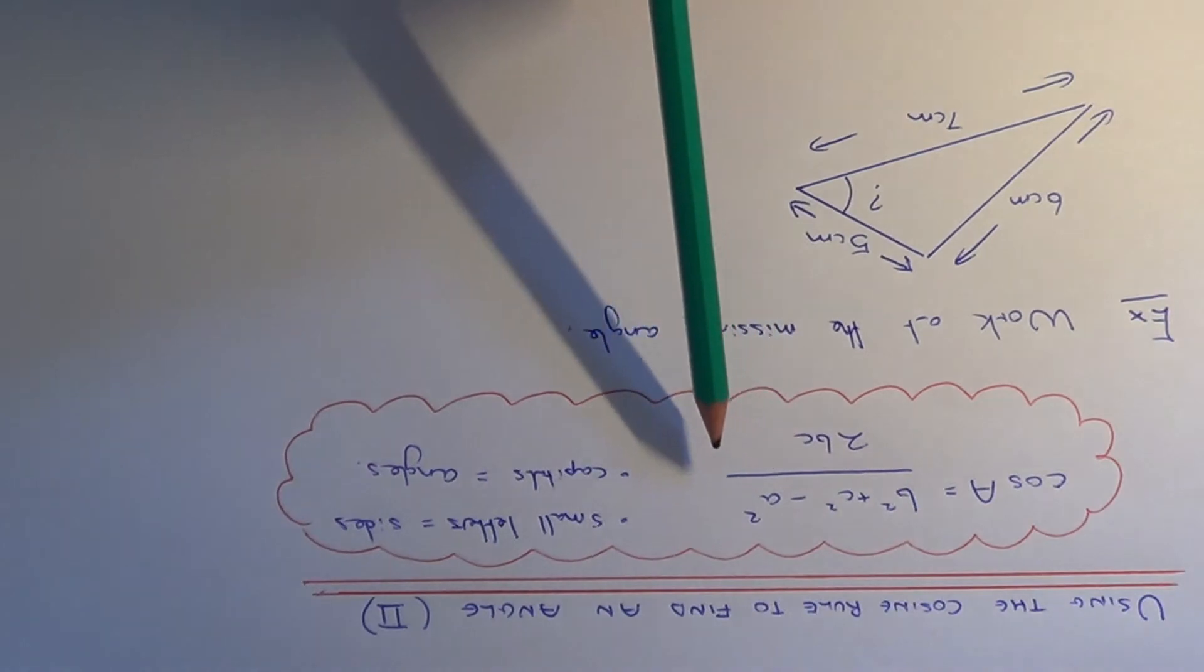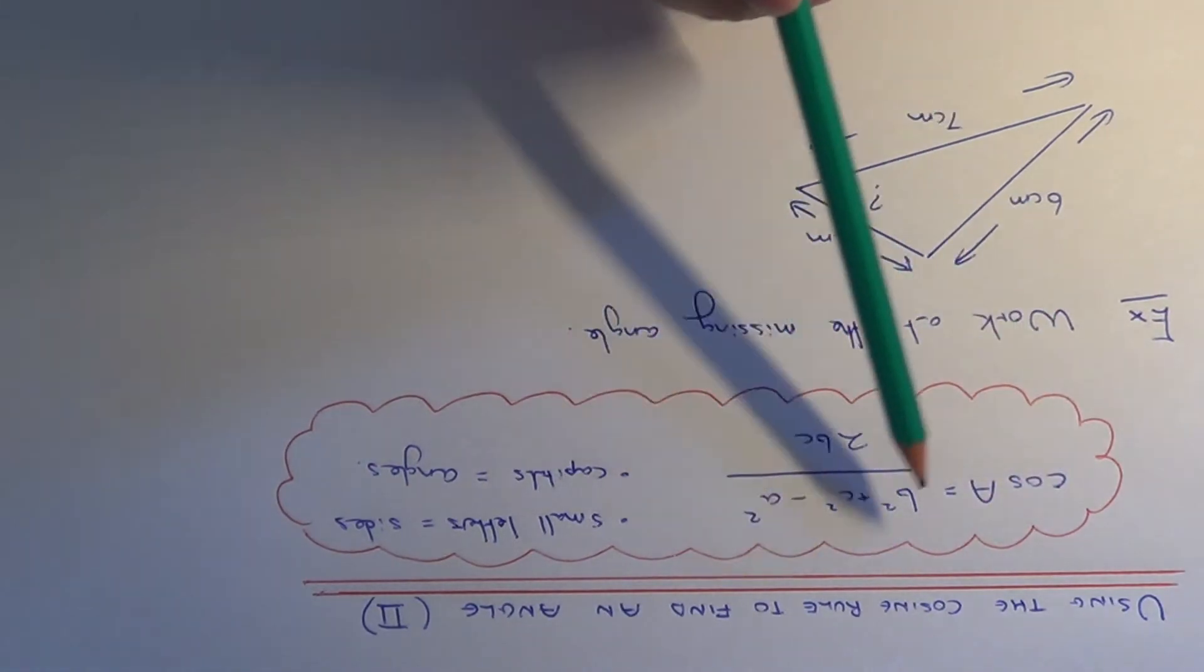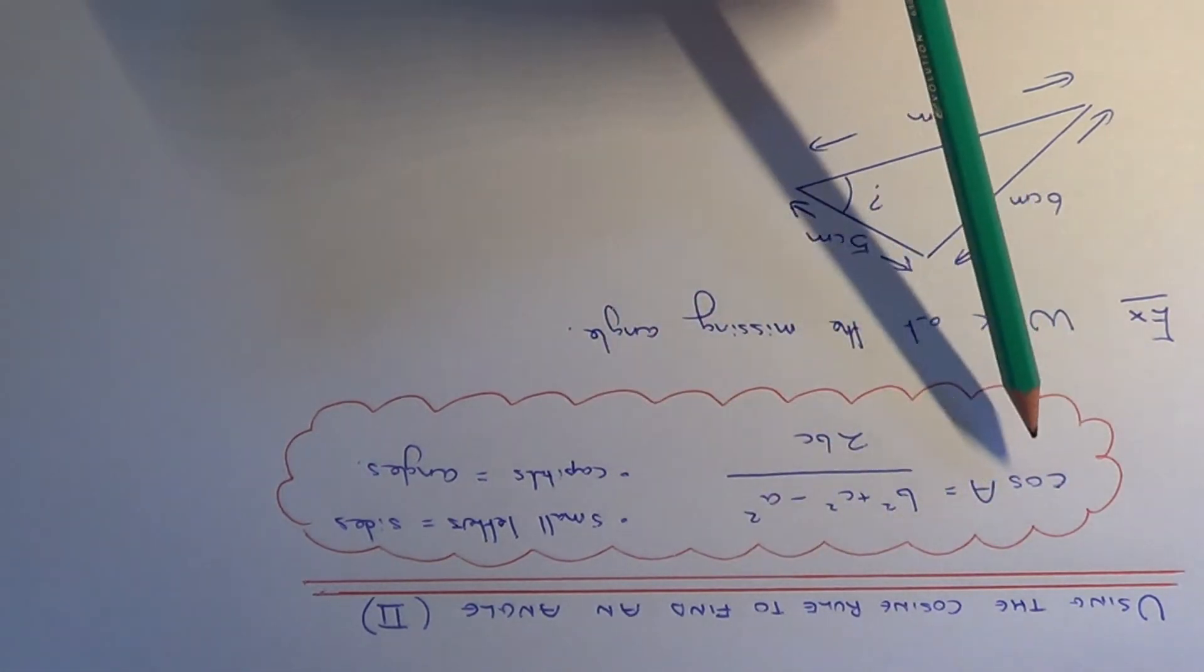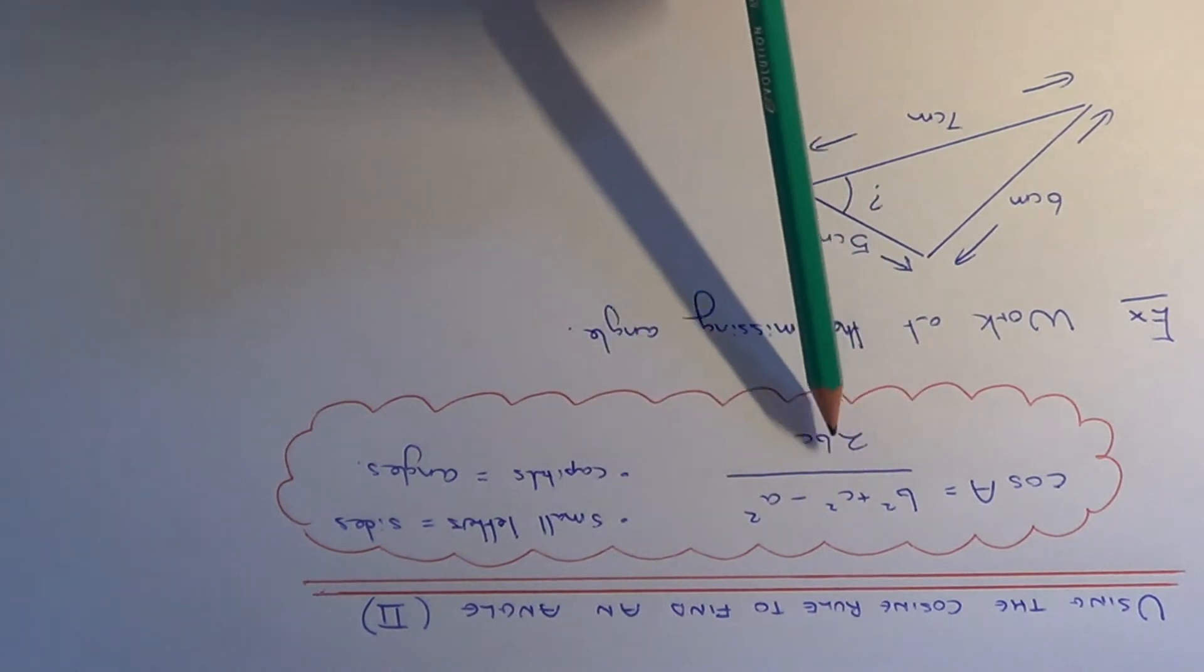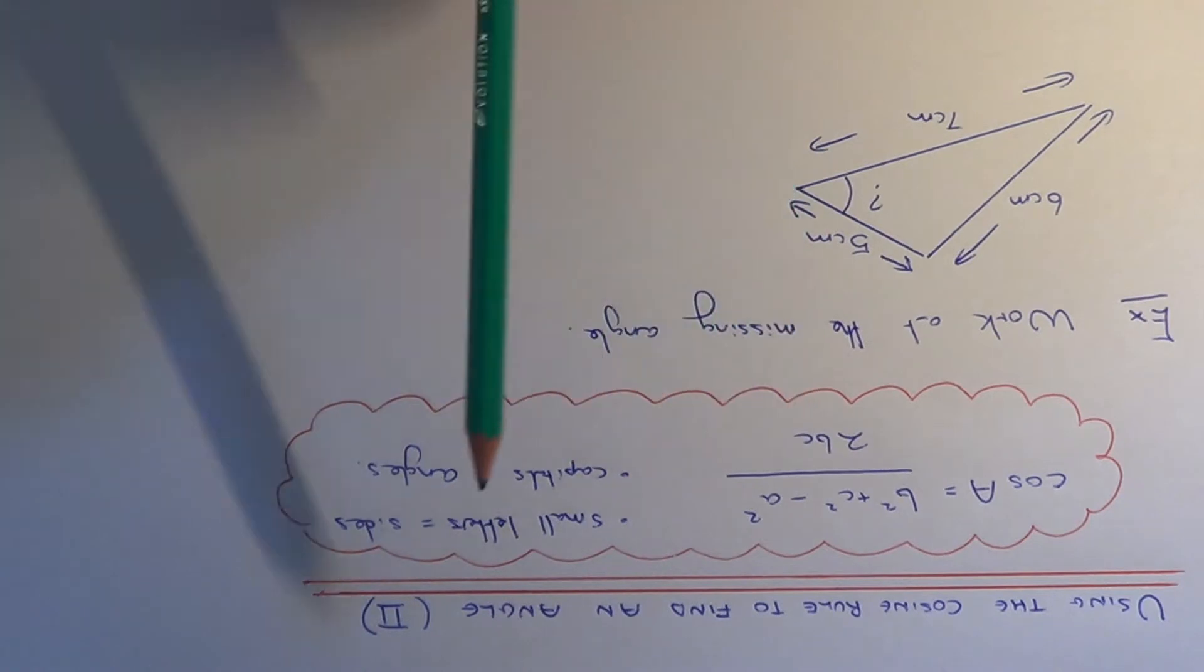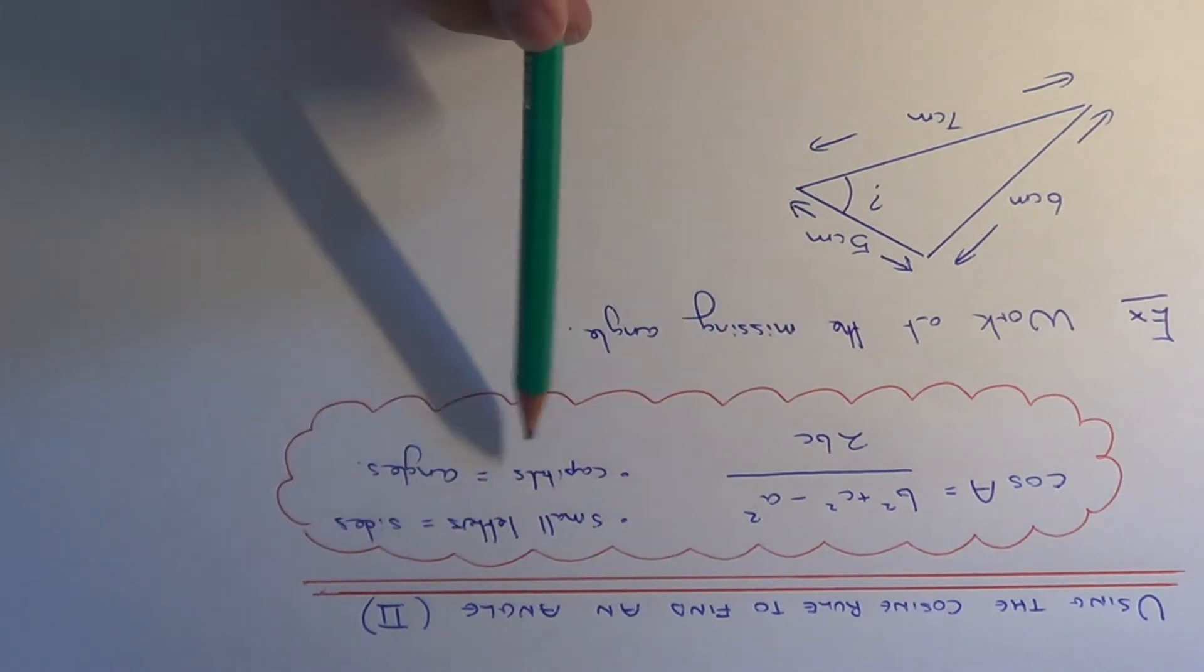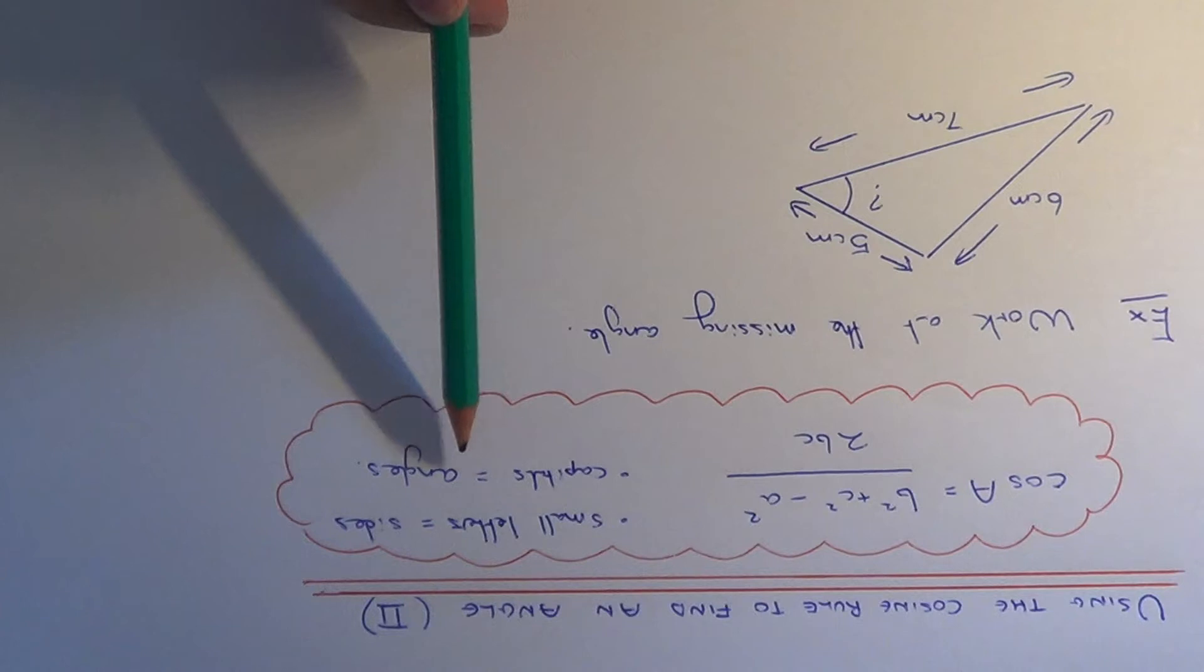So the formula that we are going to use is cos capital A equals b squared plus c squared minus a squared all divided by 2bc. And the small letters are the side lengths and the capitals are the angles.